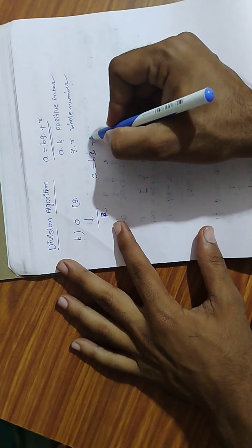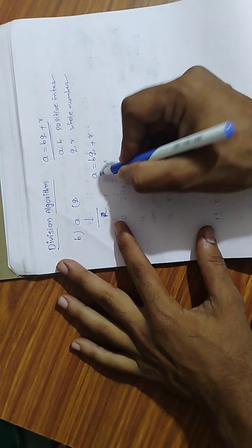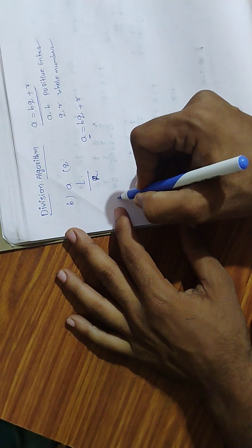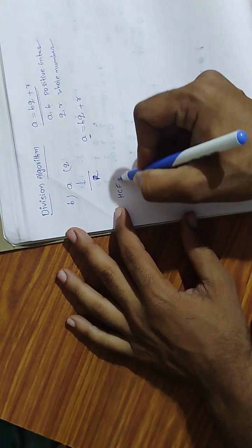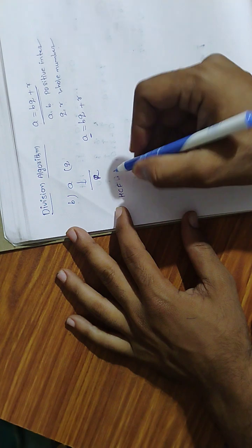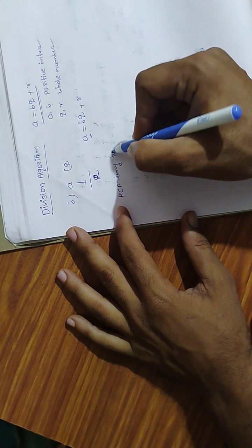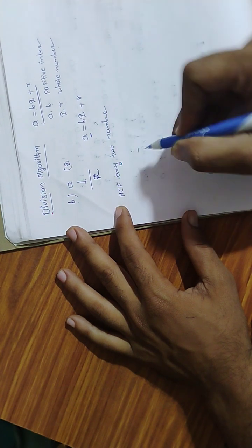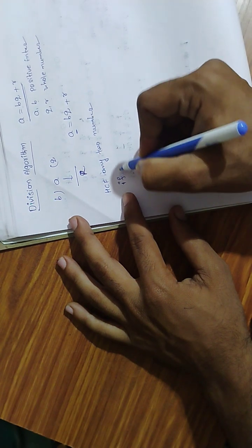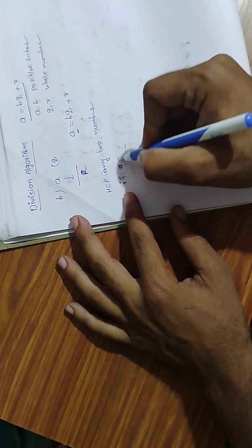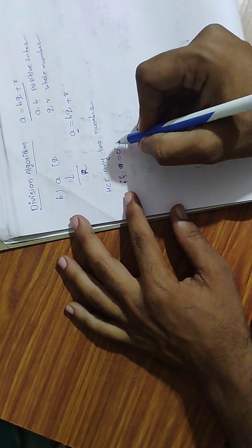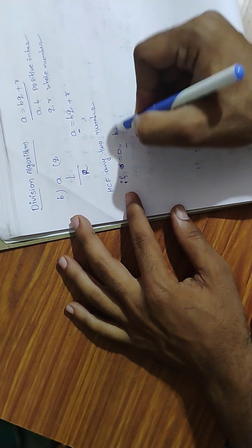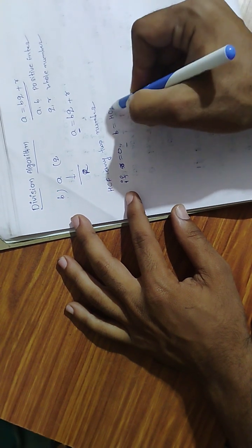Why do we use this? We use it to find the HCF of any two numbers. You have to do the process until R equals zero. When R equals zero, B is your HCF.